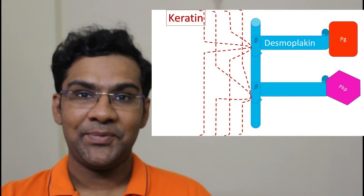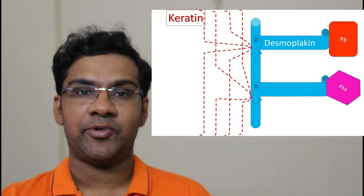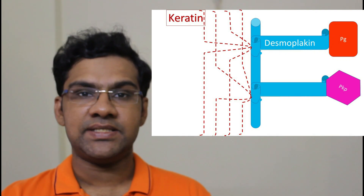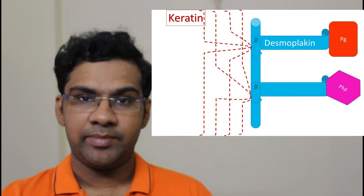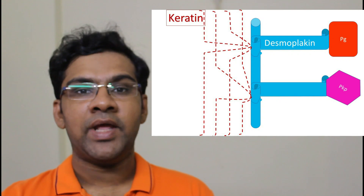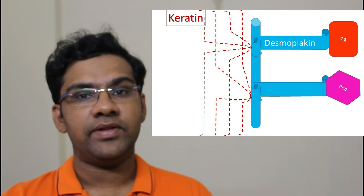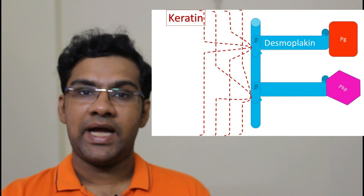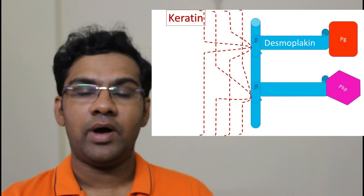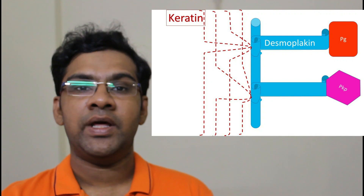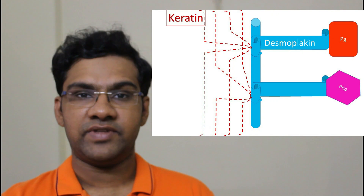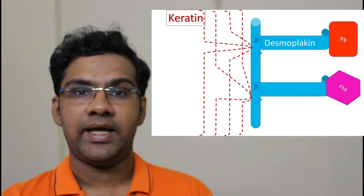Plakophillins also act as a bridge between cadherin family proteins and plakin family proteins. Sometimes plakophillins can directly bind with keratin filaments and mediate adhesion. Now, the plakin family contains multiple proteins such as PP180, desmoplakin, periplakin, envoplakin, and others. Among them, desmoplakin plays the major role in desmosomes — the heads of desmoplakin coil around one another to form a rod-like structure, binding with keratin filaments to maintain the integrity of cell-to-cell adhesions.